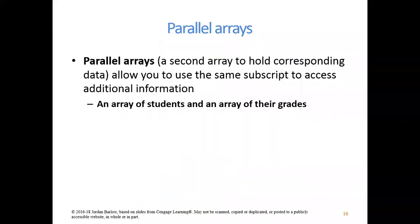Parallel arrays are when you use the same subscript in a second array holding corresponding data to access additional information. For example, the application I'm going to go through has one array of strings that is a list of student names and a second array of their grades. Element zero in the array of students might be Bob, and element zero in the grades is Bob's grade on a given assignment. Element one corresponds to Jane in the names array and to Jane's score in the scores array.